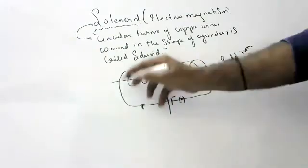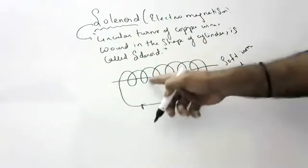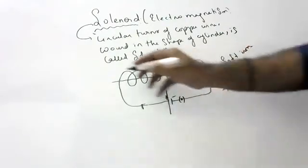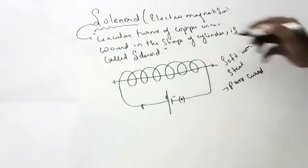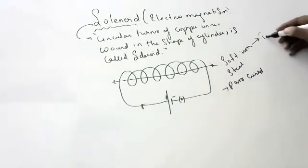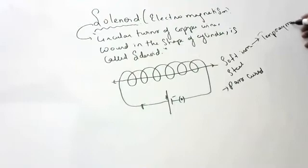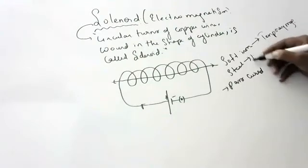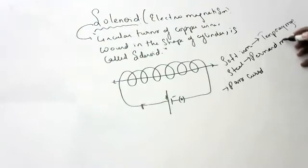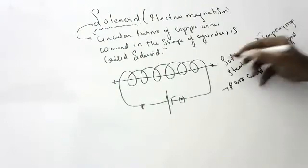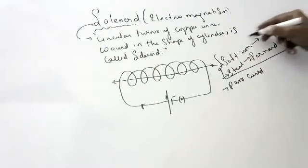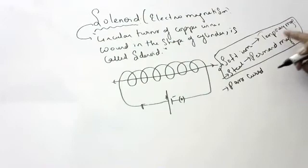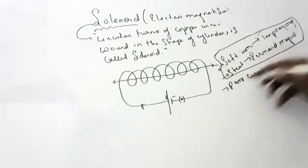Once current is passed, the material inside starts behaving like a magnet. If it is soft iron, it will become a temporary magnet. If it is steel, it will become a permanent magnet. Soft iron gives a temporary magnet; steel gives a permanent magnet.